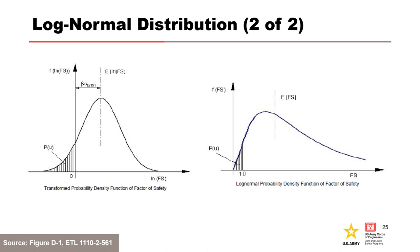Log normal distributions are used with reliability analyses. The PDF of a factor of safety can be represented by a log normal PDF. The hatched area under the curve to the left of a factor of safety of one gives the probability that the factor of safety is less than one — the probability of unsatisfactory performance. When transformed to a normal distribution by taking the natural log, the ln of one equals zero, so unsatisfactory performance corresponds to the area left of zero. The log normal distribution is favorable for factor of safety because it will never be negative, and the product of several log normally distributed variables will also be log normally distributed.